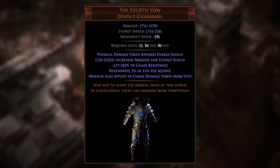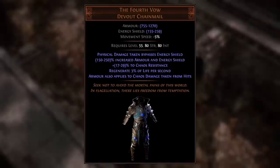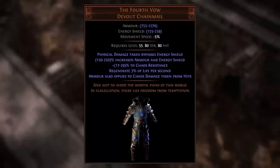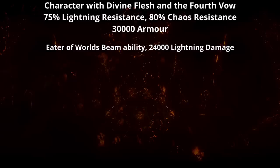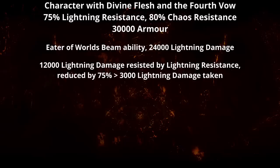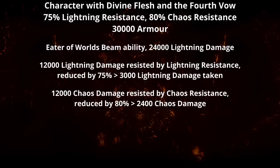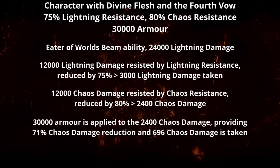One great synergy is the Fourth Vow, a unique body armor added in patch 3.21. It has the modifier: armor also applies to chaos damage taken from hits. Unlike Transcendence, this won't prevent armor from applying to physical damage — it applies the full armor value to chaos damage from hits as well. For example, a character using Divine Flesh and the Fourth Vow with 75% lightning resistance, 80% chaos resistance, and 30,000 armor takes the Eater of Worlds beam of about 24,000 lightning damage. 12,000 is taken as lightning, resisted to 3,000; the other 12,000 as chaos, resisted to 2,400, then armor provides 71 chaos damage reduction, leaving 696 chaos damage — for a total of 3,696 damage taken.